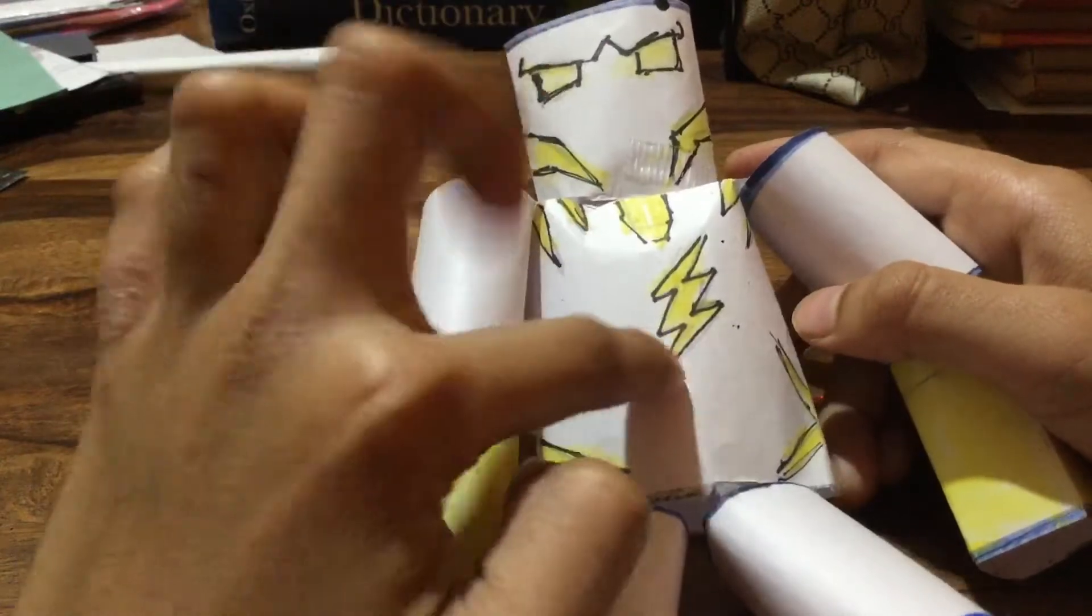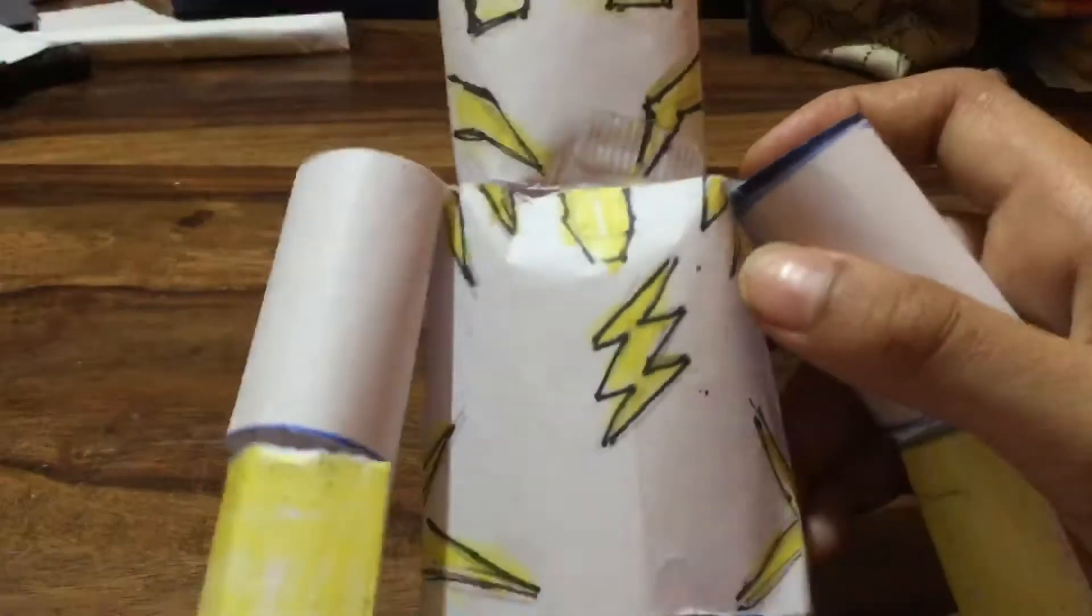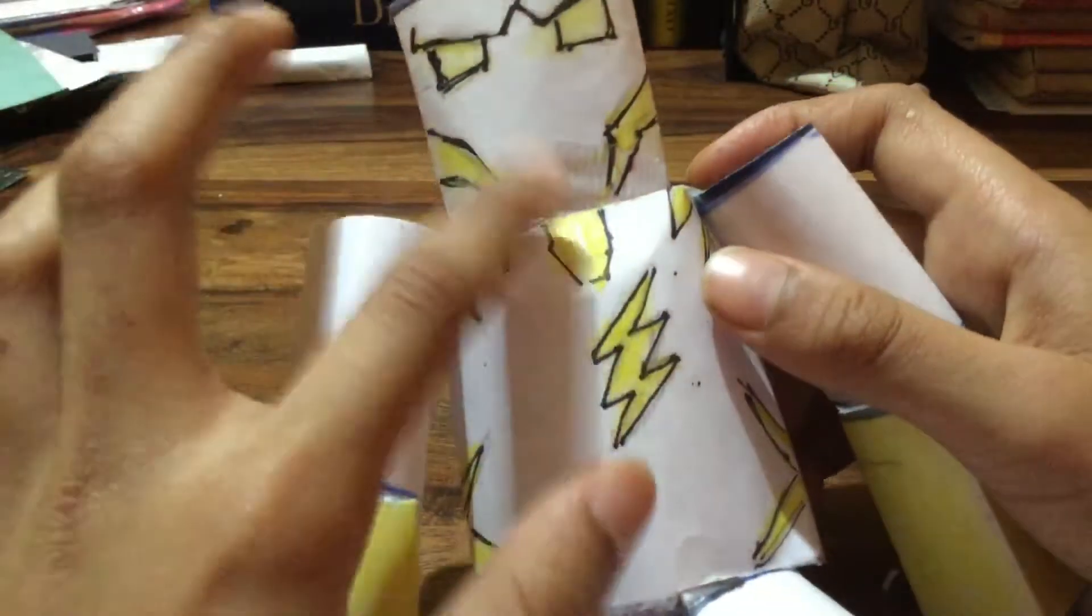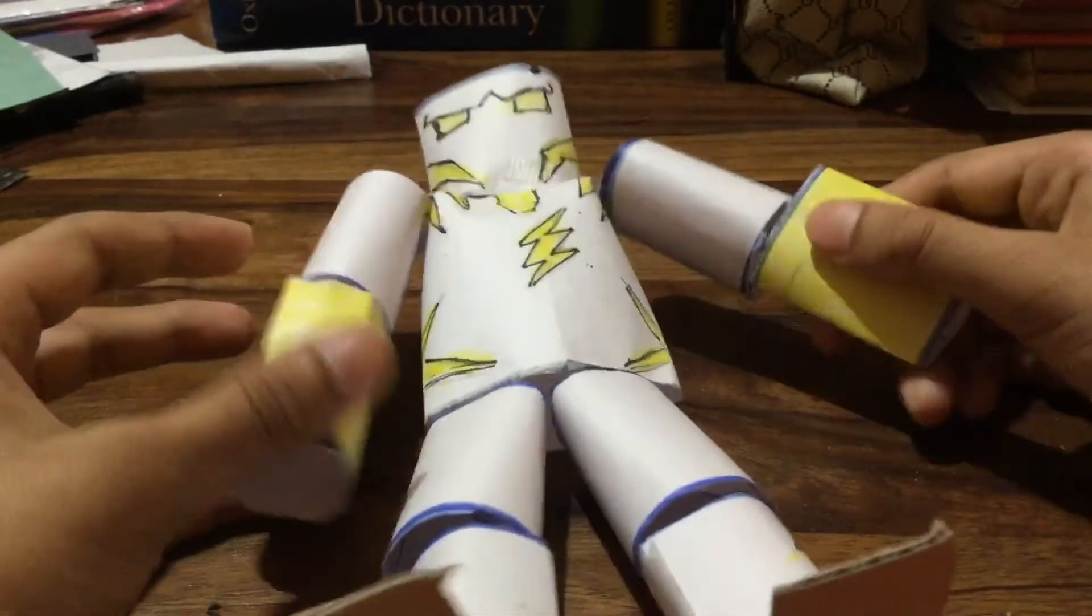Then I colored it with all the designs with pencil. You can see the pencil marks. Then I made it with a marker and then I colored it.